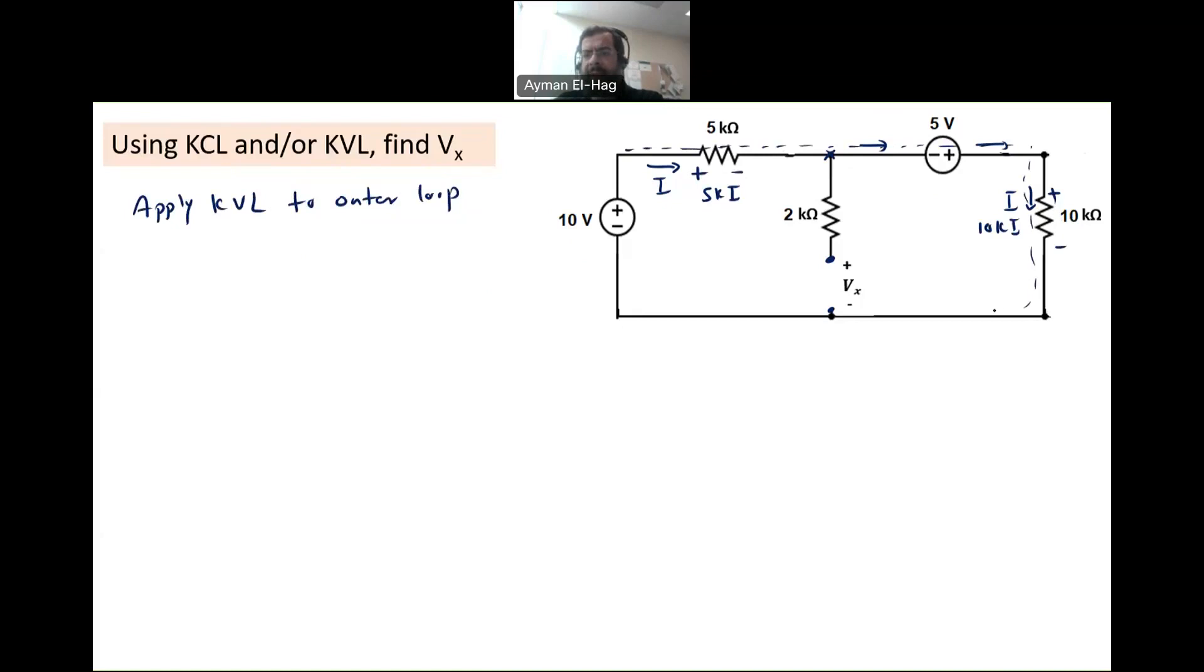To find this unknown, which is I. I don't need to apply any other equations because I have only one unknown. So we have 5Ki minus 5 plus 10Ki minus 10 equal to zero.